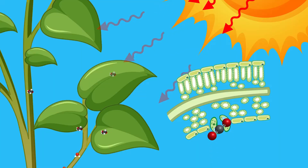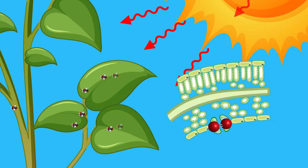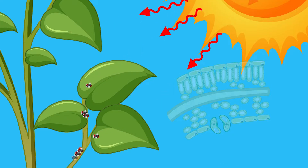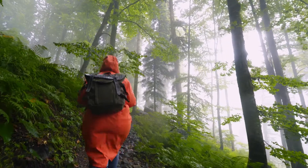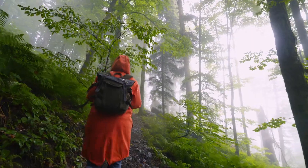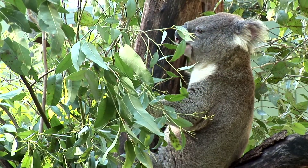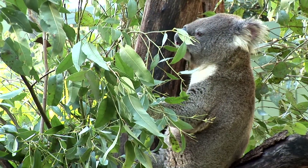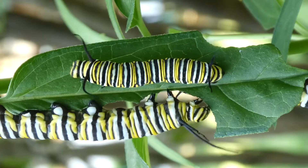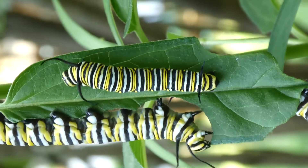Photosynthesis produces oxygen that other organisms rely on for survival. It also provides plants with the energy they need to grow. And by growing and flourishing all around our planet, they provide energy for other organisms, too.